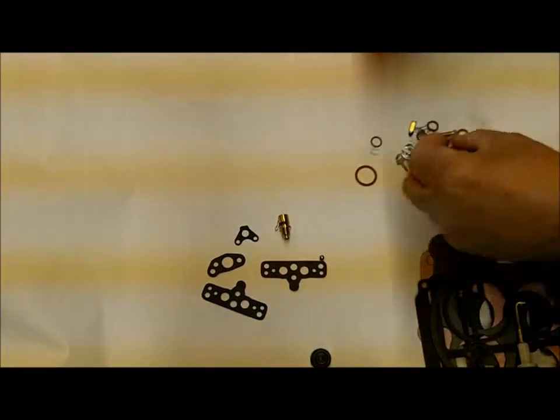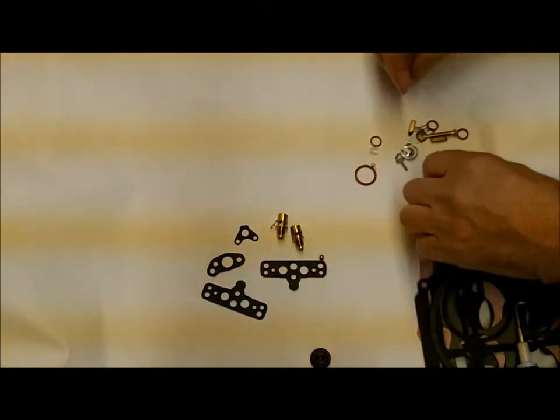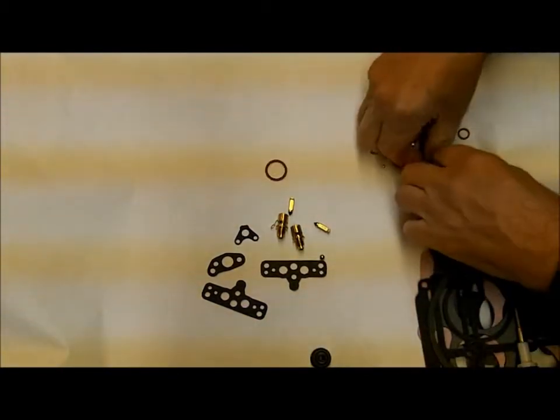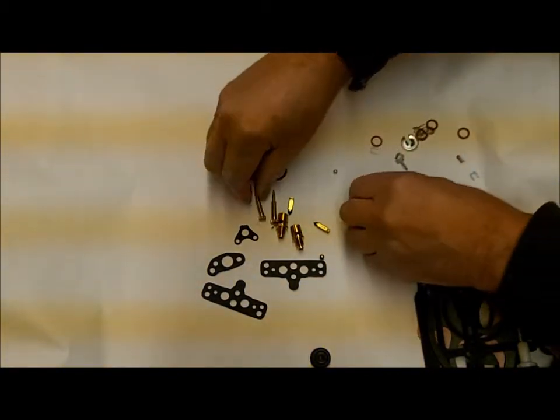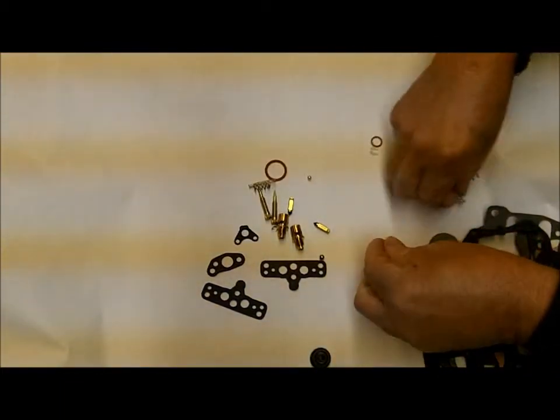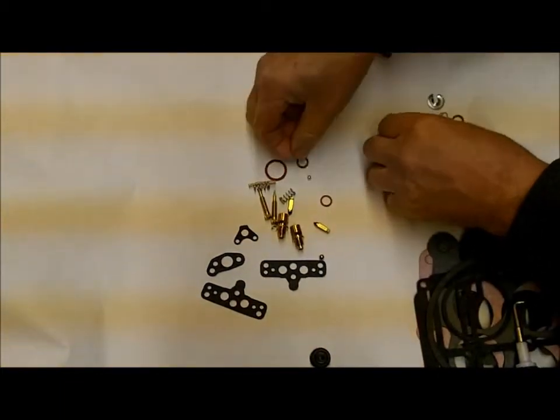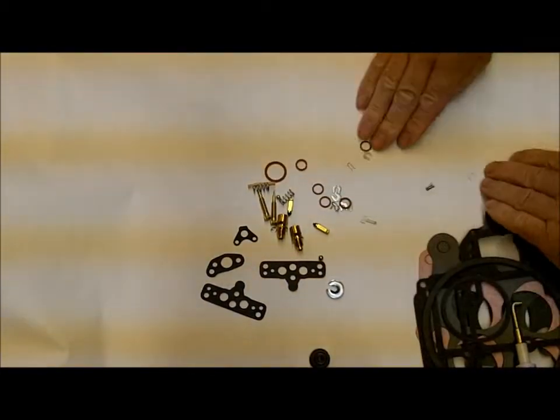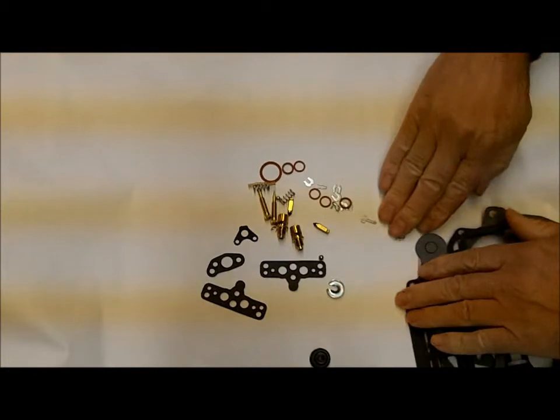You get two new needle and seats, viton tipped. You get two new idle mixture screws with new springs, and you've got lots of small various parts here, clips and retainers and fiber washers and things that you'll need.